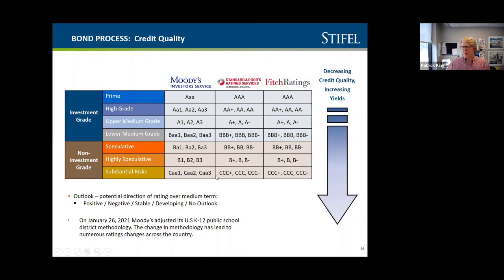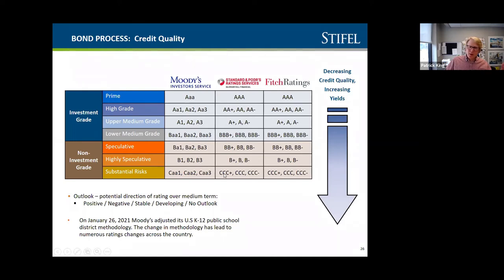The A1 category for Moody's is the most frequently assigned rating for Ohio school districts — about 40 percent fall in that category. Most Ohio school districts are in the A category or above, with the exception of a handful. Only about one district is in the speculative category. The higher the credit rating, the lower the interest rate — the same as your own personal credit score.